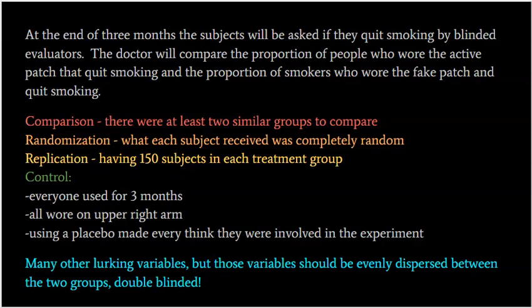Going through the four pillars to show how well-done this experiment is: first, we have comparison. There were two similar groups to compare — 150 people wearing the patch with nicotine and 150 wearing the fake patch. You need at least two groups to compare in order to call it an experiment.